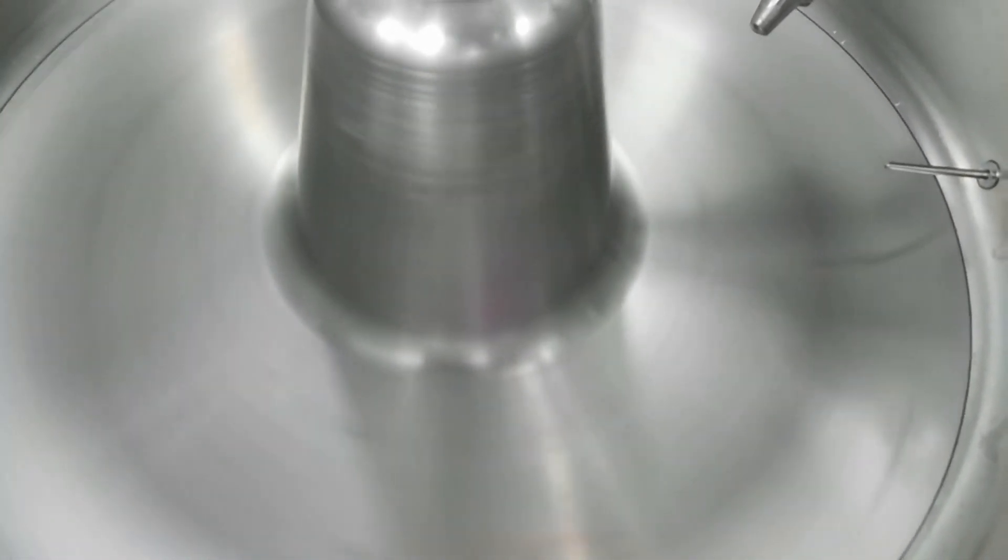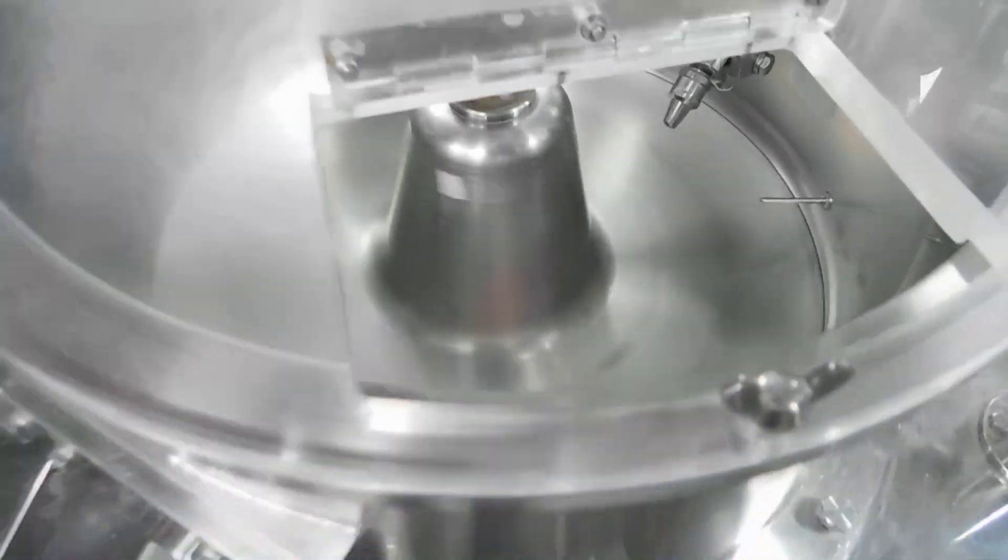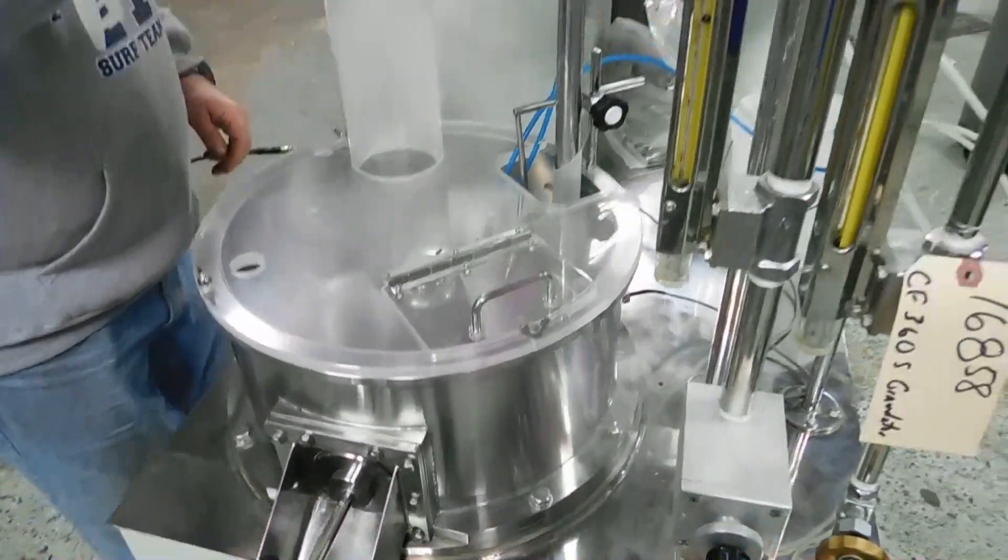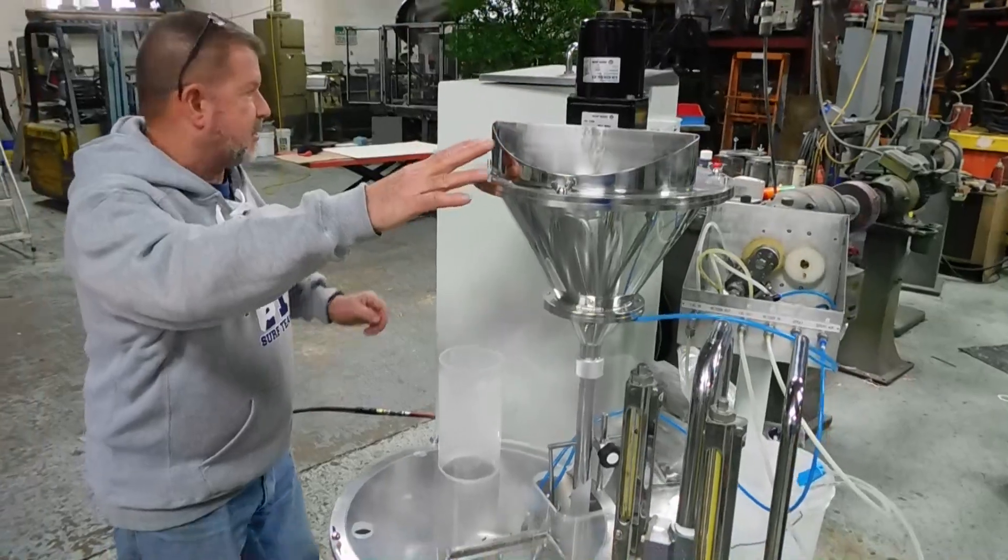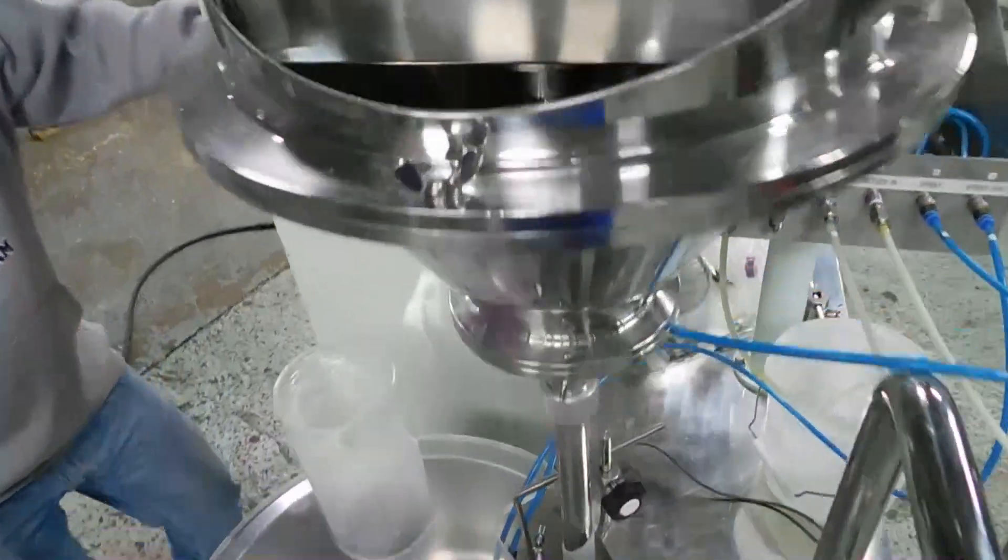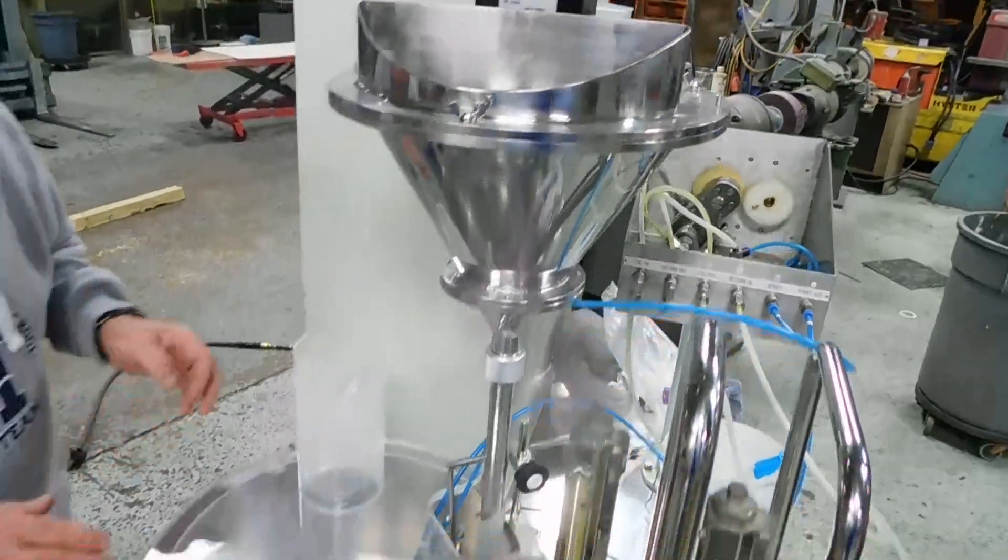We're running the heating system to it right now. And also, while our cameraman is there, this is the powder feeder. Take a look inside. That's also variable speed. You can slow it down or speed it up, depending on how much powder feed you want inside the bowl as well.